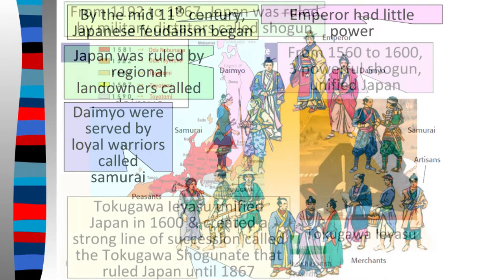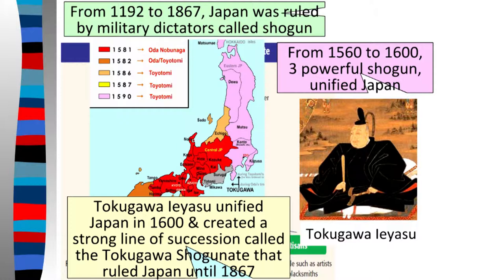These Shoguns were military dictators, and you had that guy named Tokugawa Ieyasu. He's going to start to unify Japan and create this strong line of succession known as the Tokugawa Shogunate, and that's going to be that 200-year period of isolation that we talked about.